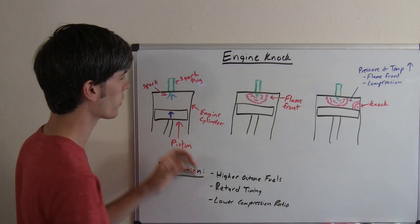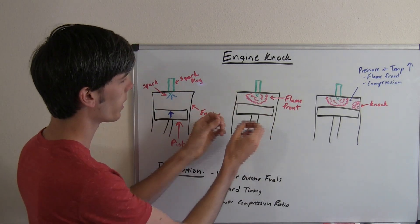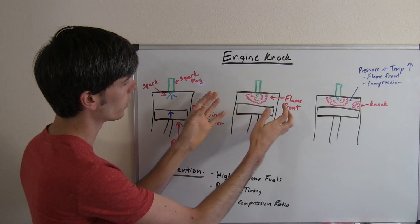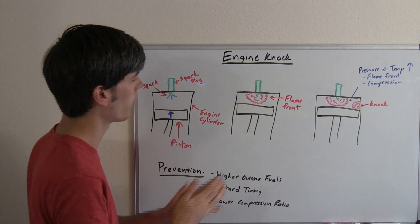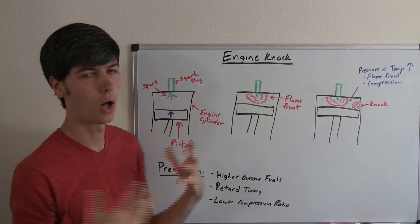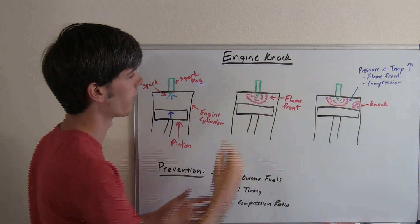So you have that spark ignite as the piston's on its way up. As the piston's moving up, you start to have this flame front move out. This flame front is going to burn all the air-fuel mixture in that cylinder.